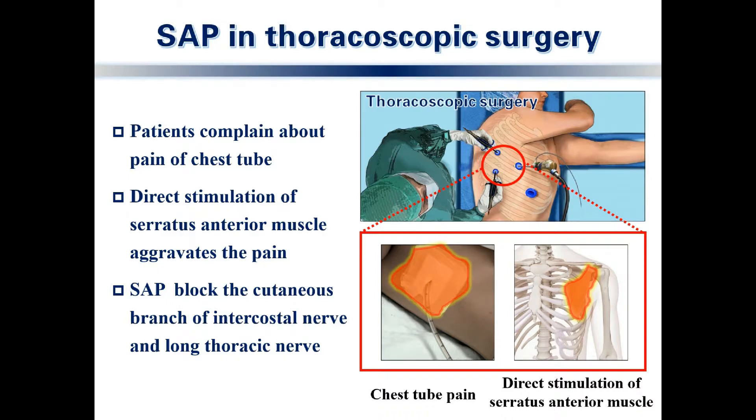Fortunately, SAP techniques block the cutaneous branch of the intercostal nerve as well as the long thoracic nerve.